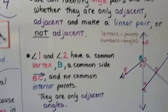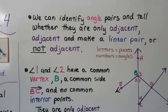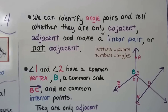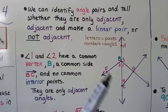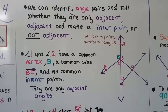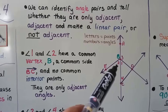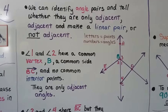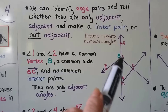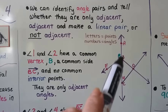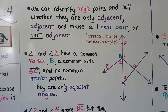We can identify angle pairs and tell whether they are only adjacent, adjacent and make a linear pair, or not adjacent. In this diagram, the letters are the points and the numbers are the angles. We have angle 1 and angle 2 — they share a common vertex B and a common side BC with no common interior points, so they're only adjacent angles.